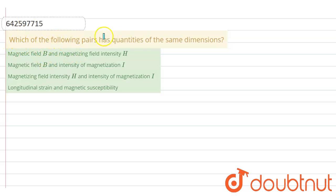Which of the following pairs has quantities of the same dimensions? Options are: magnetic field and magnetizing field intensity, magnetic field and intensity of magnetization, magnetic field intensity and intensity of magnetization, and longitudinal strain and magnetic susceptibility.